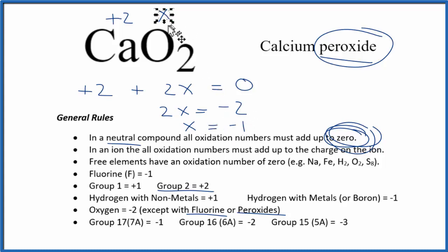And that minus 1, that's the oxidation number on each of the oxygens here in CaO2. So minus 1 up here, and that's it. Those are the oxidation numbers for CaO2, calcium peroxide.